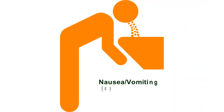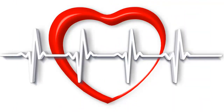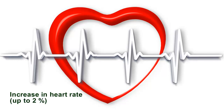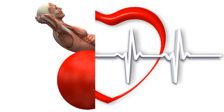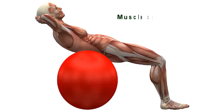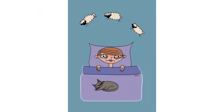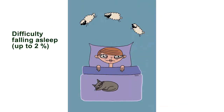Nausea and vomiting: up to 4%. Increase in heart rate: up to 2%. Muscle cramps: up to 2%. Difficulty falling asleep: up to 2%.